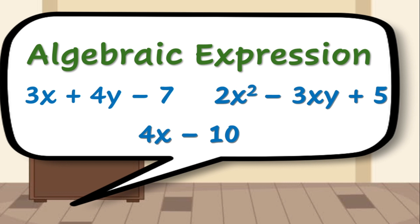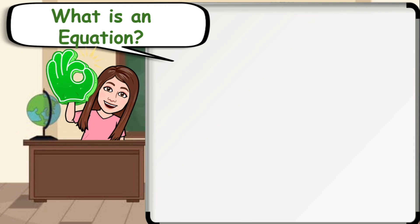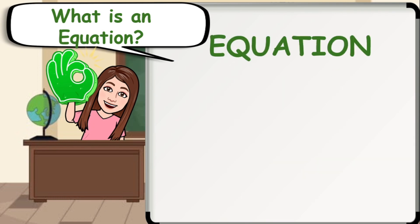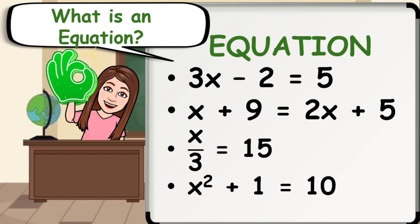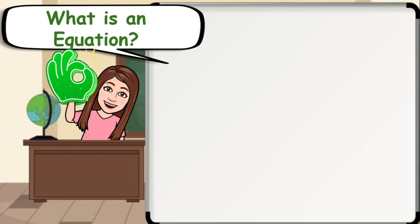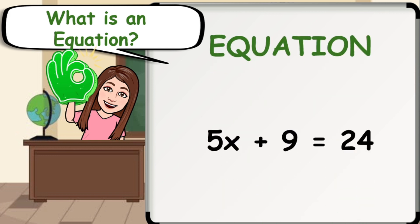It is now time to introduce to you what an equation is and how it differs from an expression. In algebra, an equation can be defined as a mathematical statement consisting of an equal symbol between two algebraic expressions that have the same value. Here are some examples of equations: 3x minus 2 is equal to 5; x plus 9 is equal to 2x plus 5; x over 3 is equal to 15; and x squared plus 1 is equal to 10. Also, in an algebraic equation, the left side is equal to the right side.